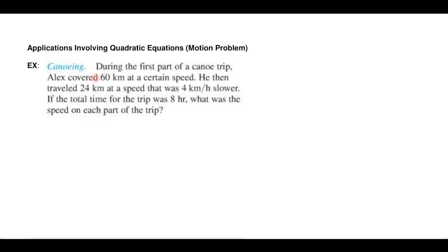Hi everyone. In this lesson I'd like to look at an application involving quadratic equations and in particular a motion problem. It says during the first part of a canoe trip Alex covered 60 kilometers at a certain speed and he then traveled 24 kilometers at a speed that was 4 kilometers per hour slower. And if the total time for the trip was 8 hours, what was the speed on each part of the trip?